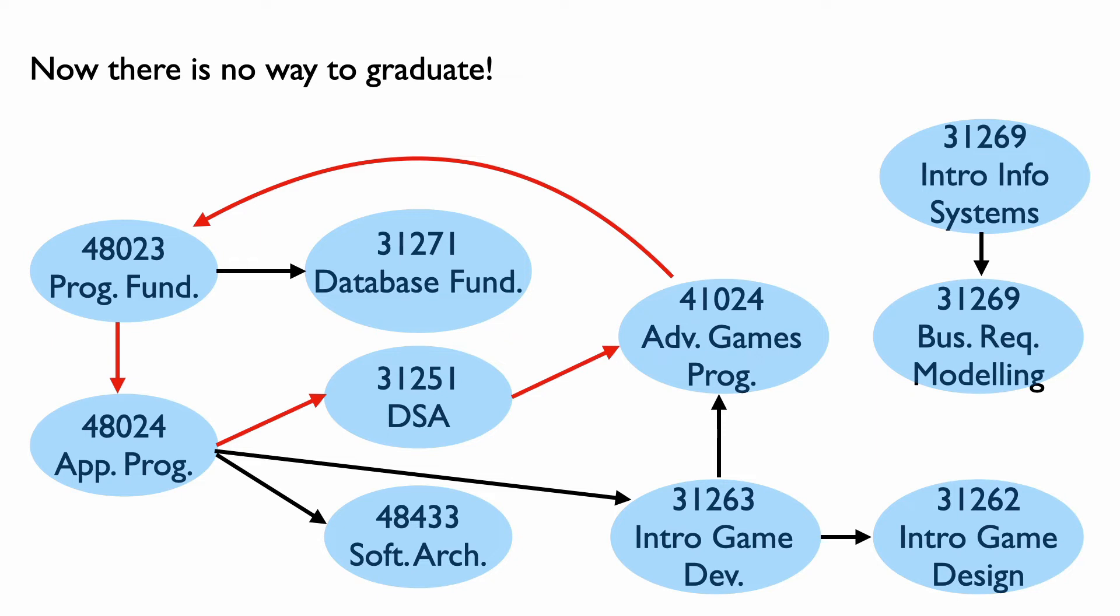structures and algorithms because that requires applications programming. And we can't start with applications programming because this requires programming fundamentals. And now we're back to the beginning. So in this case, there's actually no order in which you can take these courses and respect the prerequisite constraints. There's no topological ordering of this graph.